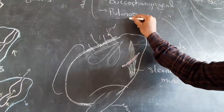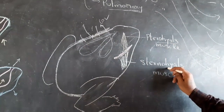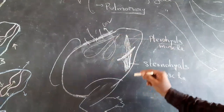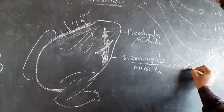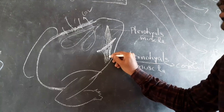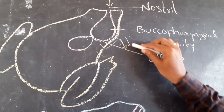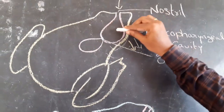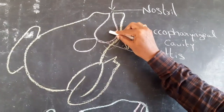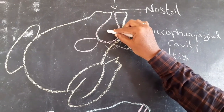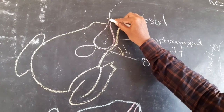In pulmonary respiration, two muscles are involved: pterohyoid muscle and sternohyoid muscle. During inspiration, sternohyoid muscles contract. Due to the contraction of sternohyoid muscle, the floor of the buccopharyngeal cavity is lowered. The volume increases in the buccopharyngeal cavity, so pressure decreases. Atmospheric air enters into the buccopharyngeal cavity through the external nostrils. At this time, the glottis is closed.